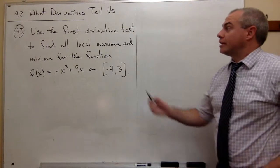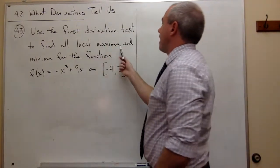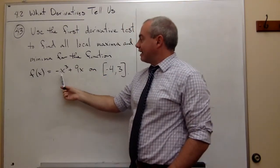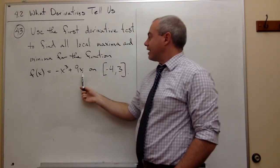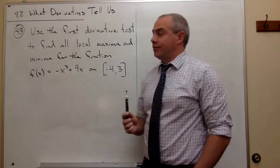In problem number 43, I'd like to use the first derivative test to find all local maxima and minima for the function f(x) = -x³ + 9x on the interval from -4 to 3.